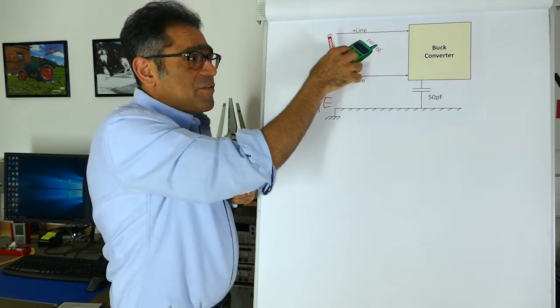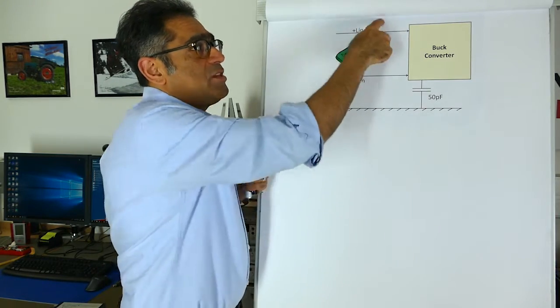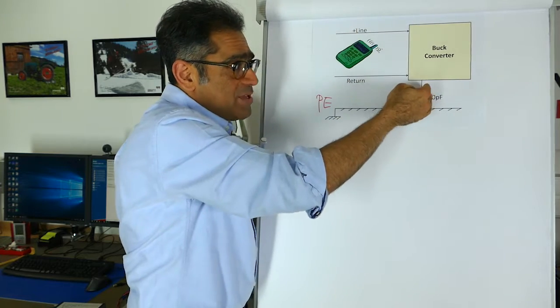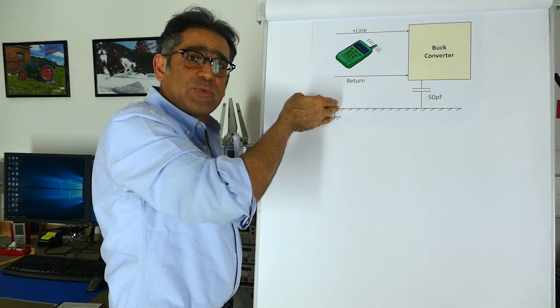The radiated emissions from the mobile phone will couple with these two cables and will flow through this capacitor and back down to protective earth.